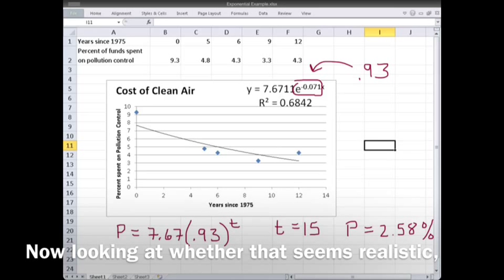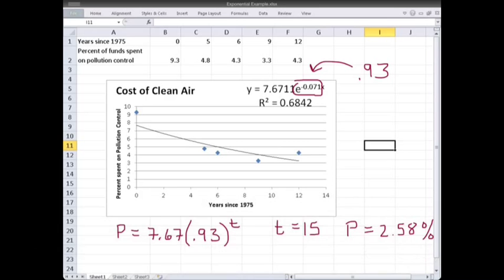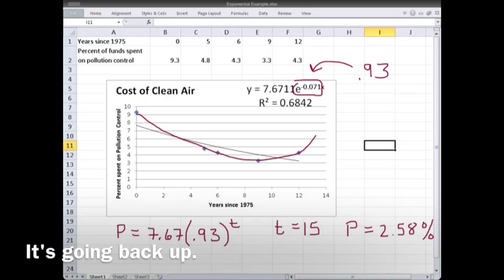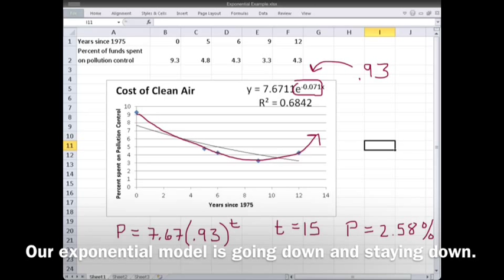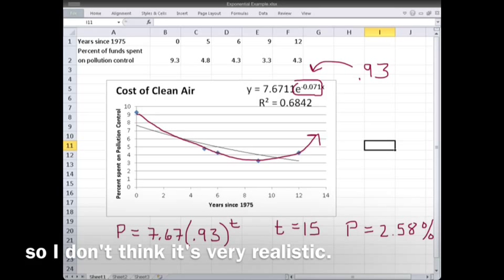Now looking at whether that seems realistic, the actual data looks more like it's a U shape, it's going back up. And our exponential model is going down and staying down. So I don't think it's very realistic.